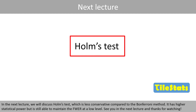In the next lecture, we'll discuss Holm's test, which is less conservative compared to the Bonferroni method. It has higher statistical power, but is still able to maintain the family-wise error rate at a low level. See you in the next lecture and thanks for watching.